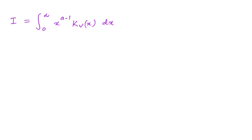Hello everyone, welcome to the mathematics channel. In this video we are going to solve this interesting integral: the integral from 0 to infinity of x to the a minus 1 times Kᵥ(x) dx, where Kᵥ(x) is the modified Bessel function of the second kind.